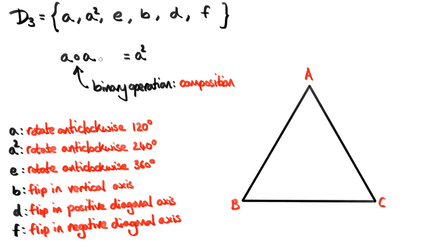Now, what happens if I try a third rotation by 120 degrees? Remember we're using a binary operation, so we can only compose two elements of our set at a time. We could do the first two first and then the third transformation, or the second and third first and then the first. Remember that the order of transformations goes from right to left. If we compose A squared — rotation by 240 degrees — with A, we rotate the triangle first by 120 degrees and then by 240 degrees. Those two rotations together give 360 degrees, bringing the triangle exactly back to where it was, including the vertex labels. So this transformation is doing nothing at all.